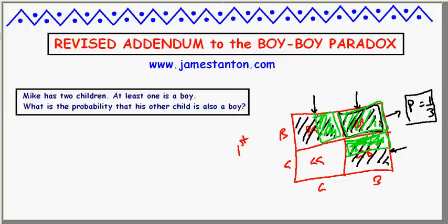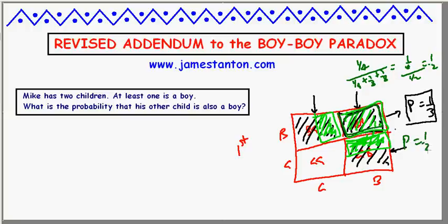So what I really have is: Mike showed me a photograph of one of his kids and it's a boy — what are the chances he's a boy-boy person? Amongst all the green scenarios where someone showed me a photograph of a boy, the proportion of the boy-boy area out of the total green area is one quarter divided by one quarter plus half of a quarter plus half of a quarter — that's one quarter out of one half, which is one half. So in that scenario I would argue the probability of Mike being a boy-boy person is one half.